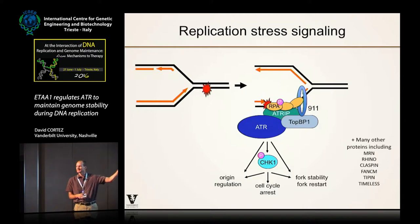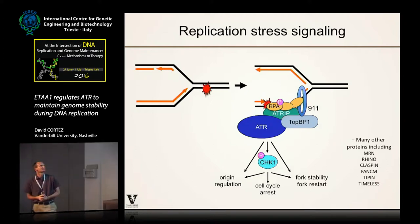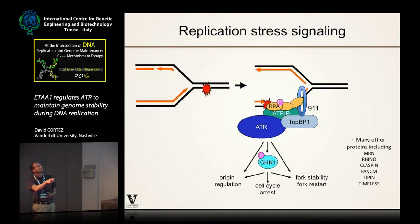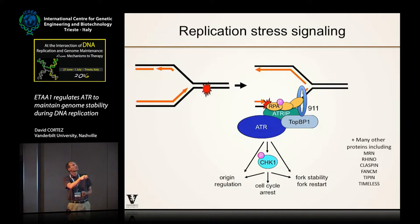This is a very basic form of the ATR signaling pathway that we have been studying for quite some time, summarizing many people's data. Single-stranded DNA that forms at stalled replication forks is critical to recruit multiple proteins, including the ATR-ATRIP complex through the interaction of RPA and ATRIP, as well as the 9-1-1 complex that stabilizes TopBP1. That protein is a direct activator of the ATR kinase, discovered by Bill Dunphy's lab, by binding ATR and ATRIP and stimulating its kinase activity towards substrates like CHK1.